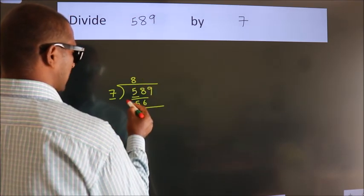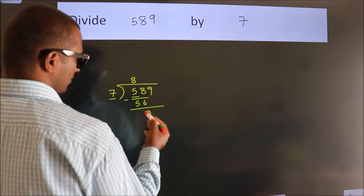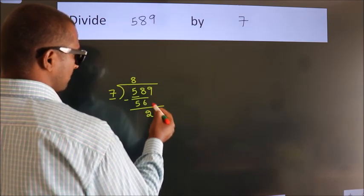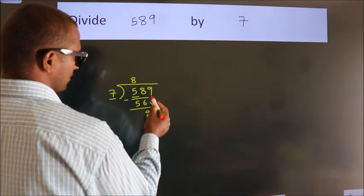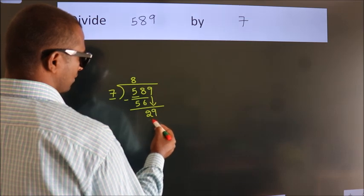Now we subtract and get 2. After this, bring down the next number, 9. So we have 29.